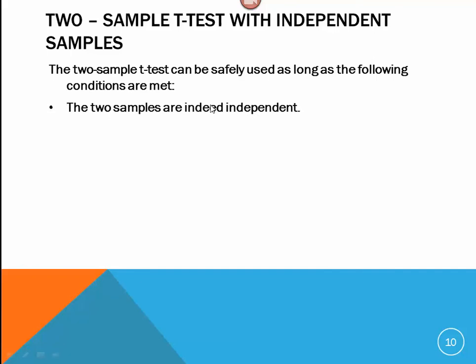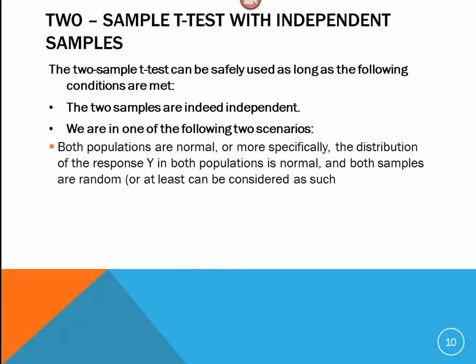First of all, the two samples are indeed independent. We're assuming that. And, when we're in one of the following two scenarios. Number one, both populations are normal, or more specifically, the distribution of the response variables in both populations is normal. Notice that in my response, I'm actually dealing with numbers, so we can really talk about normality. And, both samples are random, or at least can be considered as such.